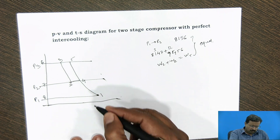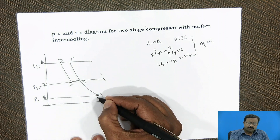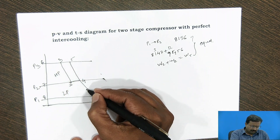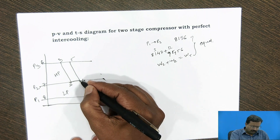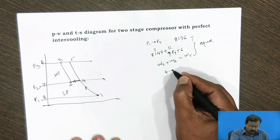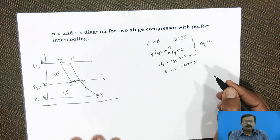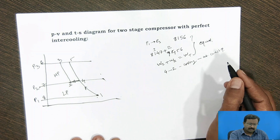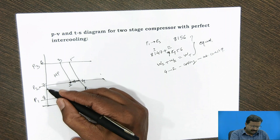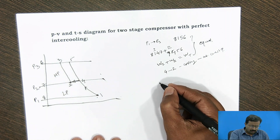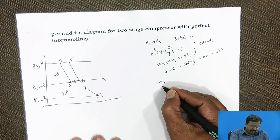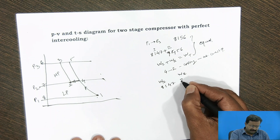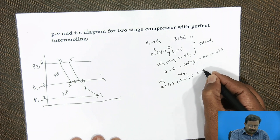What is the meaning of intercooling? In the LP cylinder, 8 to 1 is suction, then 1 to 4 is compression in the first cylinder. At point 4, we cool it at constant pressure — so 4 to 2 is a constant pressure cooling process through the intercooler. Then in the HP cylinder, the process 7, 2, 3, 6 is the second compression. Work done for the first stage is area 8, 1, 4, 7, and work done for the second stage is area 7, 2, 3, 6.